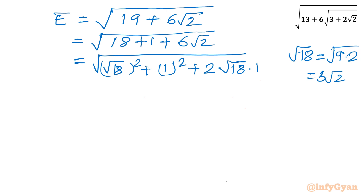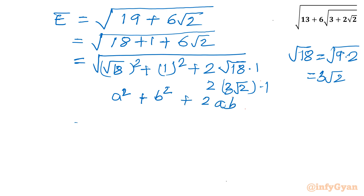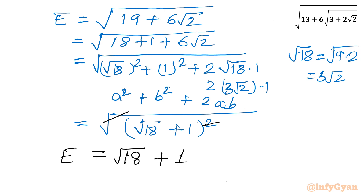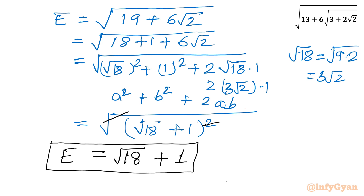So we can see 6 as 2 times 3 root 2, making it 2 root 18 times 1, which gives 2 times 3 root 2 times 1. Again this matches a squared plus b squared plus 2ab, so we can write square root of (root 18 plus 1) whole squared. The square root and square cancel out, leaving our simplified answer: root 18 plus 1. This is how we solve any nested radical problem.